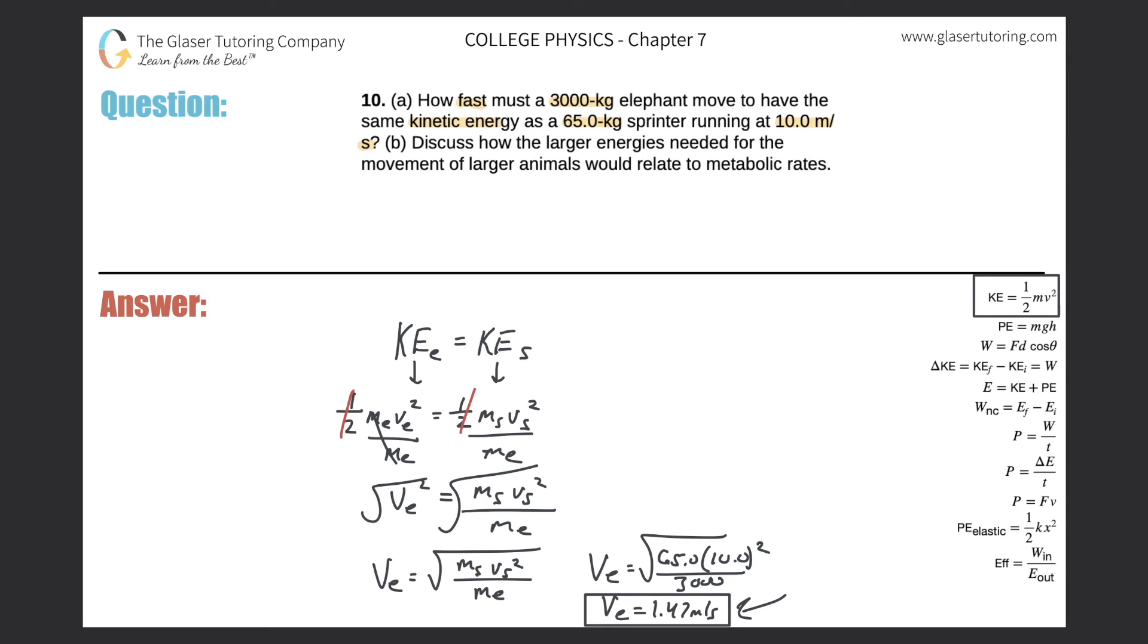And it relates to metabolic rates, meaning that the elephant would need a much faster metabolic rate. The elephant would have to consume significantly more food than a human would in order to maintain the same processes and even just locomotion, as you can see.